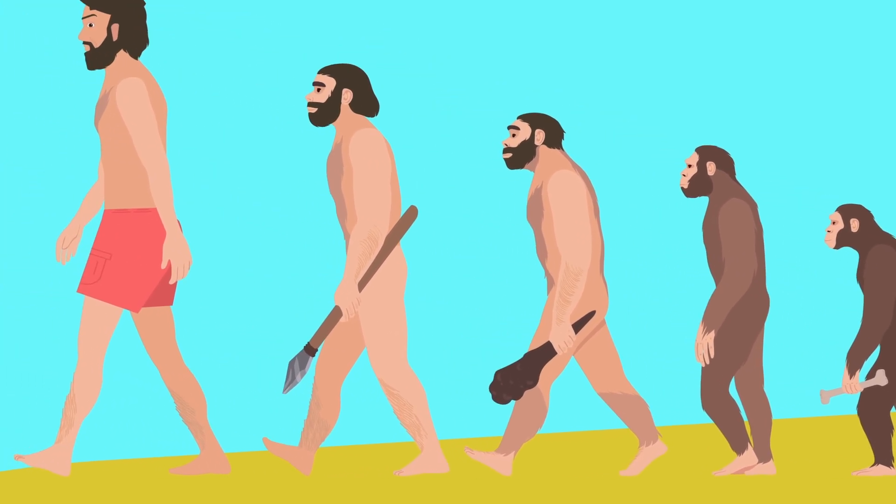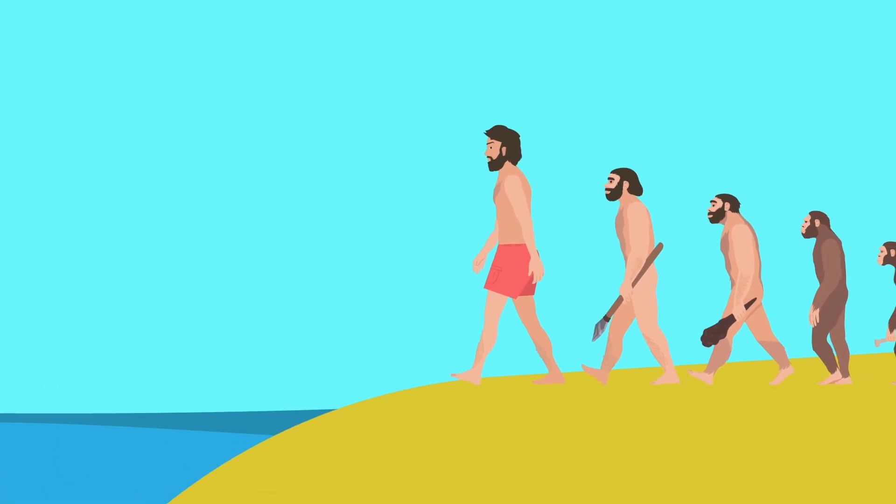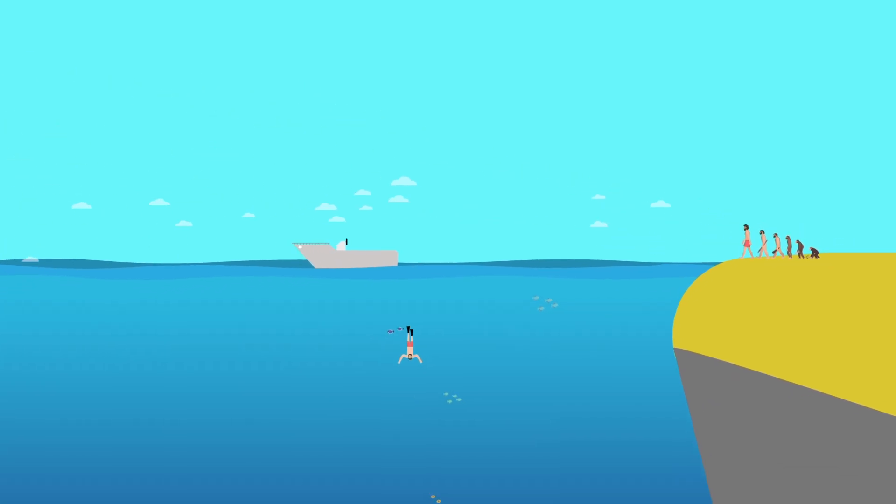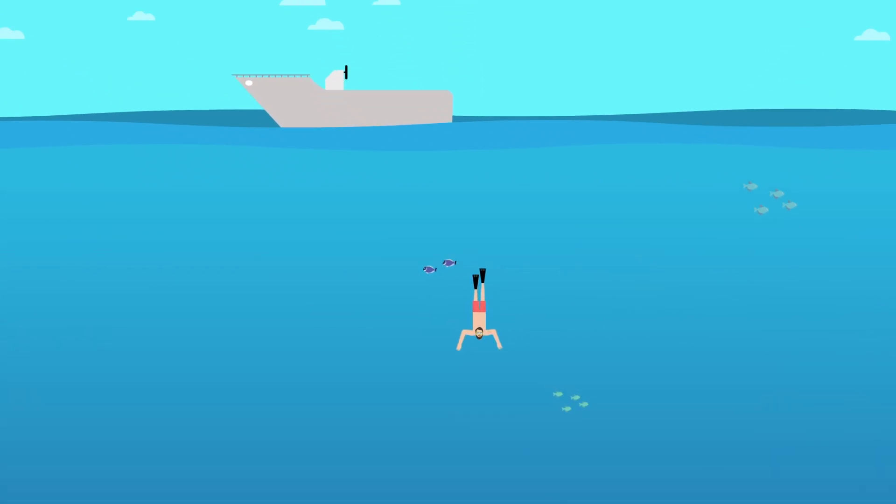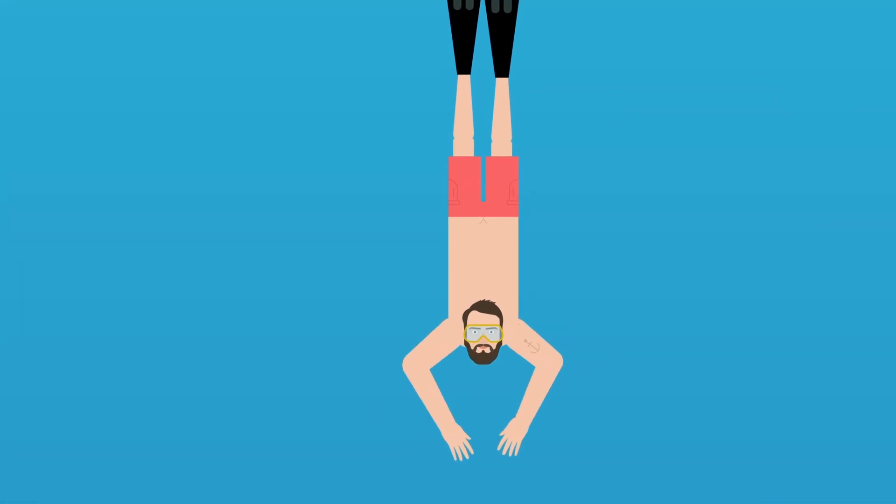Mankind is the upright ape, evolved perfectly for walking and running on land. But we also have some evolutionary features that allow us to enjoy a dip in the ocean.